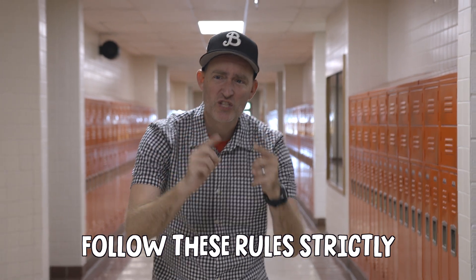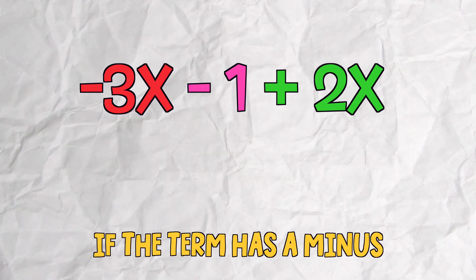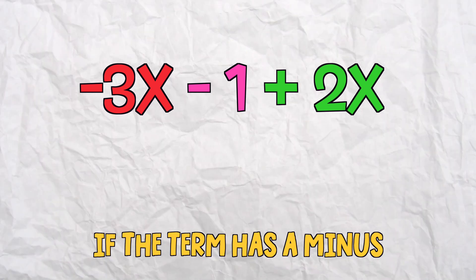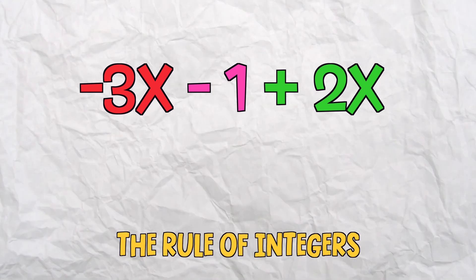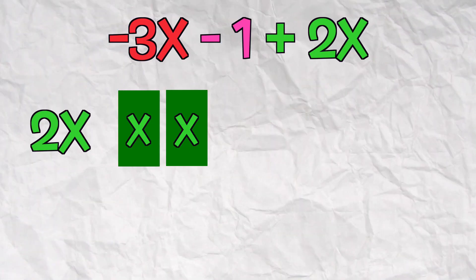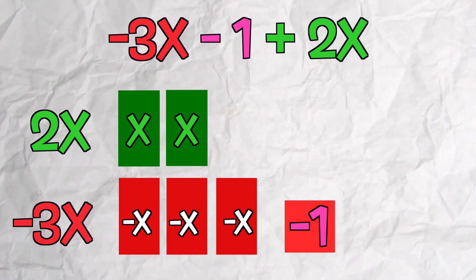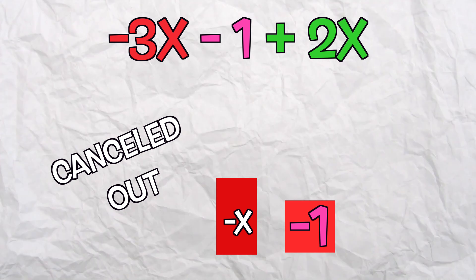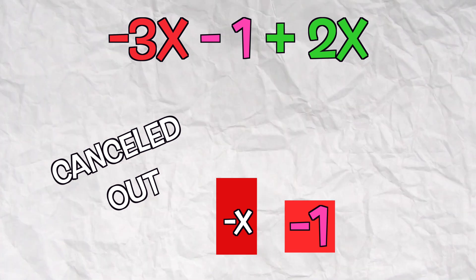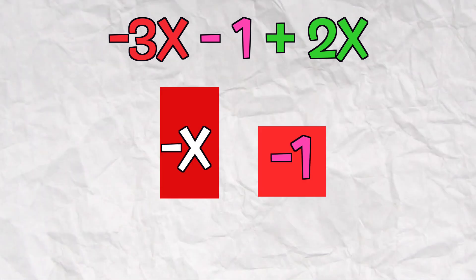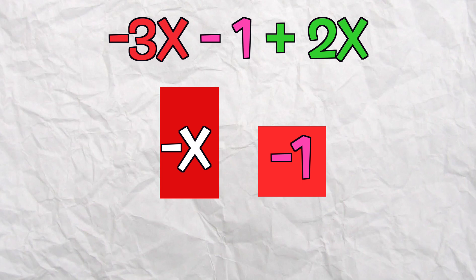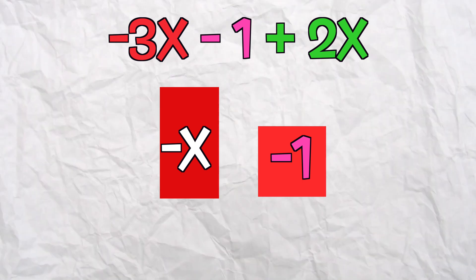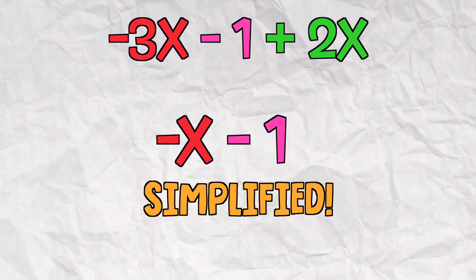Follow these rules strictly. If a term has a minus, take minus 3x minus 1 plus 2x — apply the rule of integers. 2x minus 3x must combine. The expression will present negative x and minus 1. The expression is finally simplified.